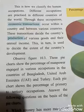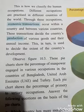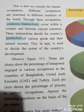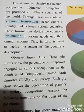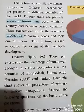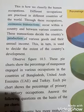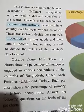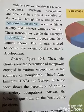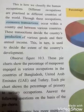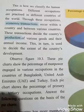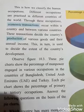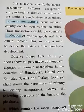Different occupations are practiced in different countries of the world. Through these occupations, economic transactions occur within a country and between various countries. These transactions decide the country's production of various goods and their annual income, which in turn is used to decide the extent of the country's development.